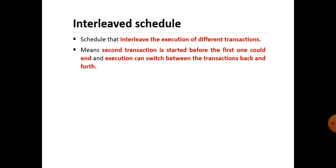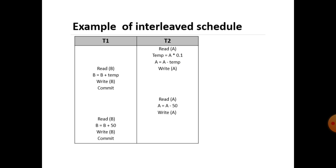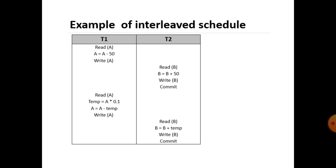The second type is an Interleaved Schedule: a schedule that interleaves the execution of different transactions, meaning a second transaction is started before the first one ends, and execution can switch between transactions back and forth. In the example, transaction T2 starts first, then switches to T1, then back to T2, then T1 again.